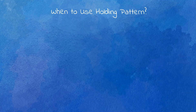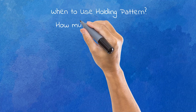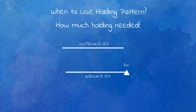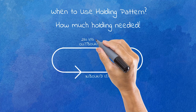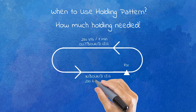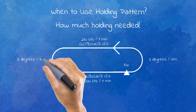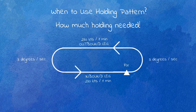How do we decide to use holding instead of vectoring? It depends on how long we need to delay the arriving aircraft. A normal holding pattern has a holding fix, outbound leg, inbound leg, and 180-degree turns on both ends. If the pattern is at 14,000 feet or below, the inbound and outbound legs should be flown at 230 knots for one minute each, and the turns should be done at a rate of 3 degrees per second. That means one circuit takes about four minutes, which is the reference for using this pattern.